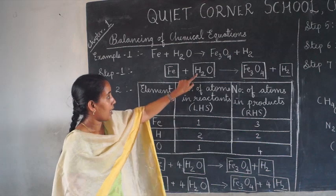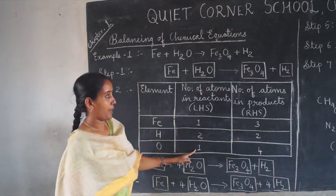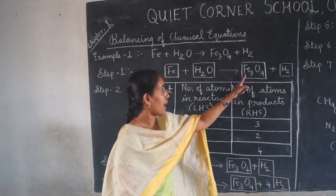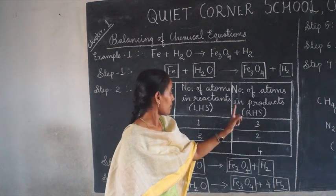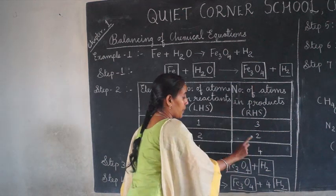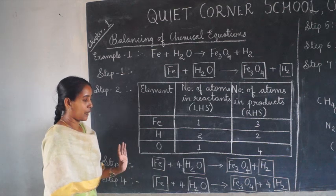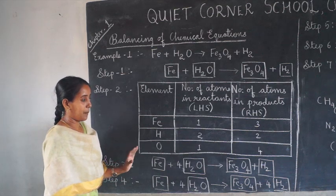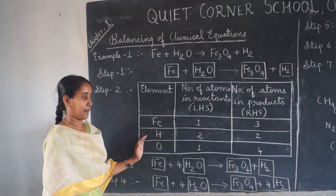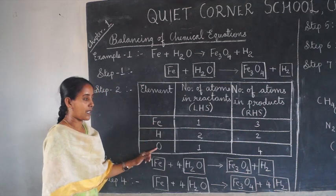On the left side of the equation: iron — one atom, hydrogen — two atoms, oxygen — one atom. On the product side: iron — three atoms, hydrogen — two atoms, and oxygen — four atoms. The third step is balancing the equation. Start with the element that has the highest number of atoms — here oxygen has the highest number.